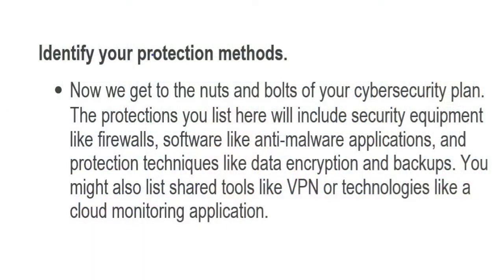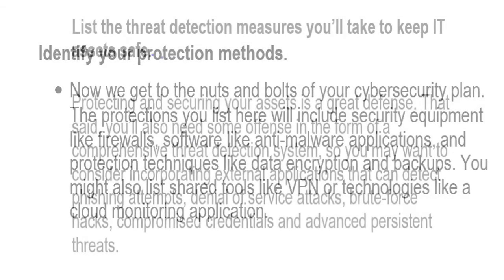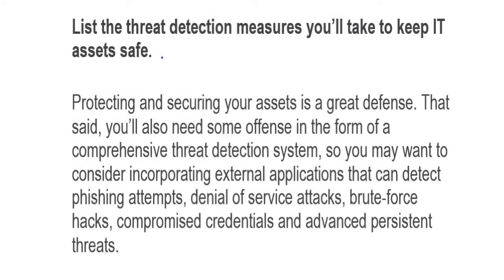The next thing we want to do is identify our protection methods. This is where we get into the nuts and bolts of the cybersecurity plan. We want to understand where we have firewalls, encryption, backup systems, and any other methodology we have put in place as a protection method. Then we want to list the threat detection measures that we have in place — detection methods that come with equipment or software and those that we've added.